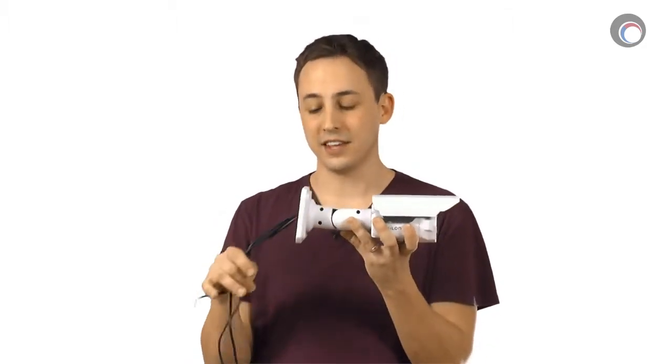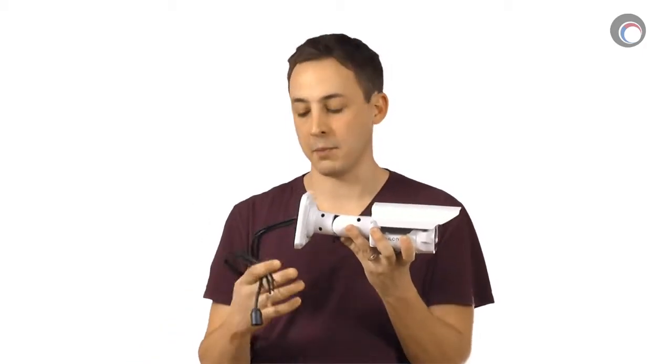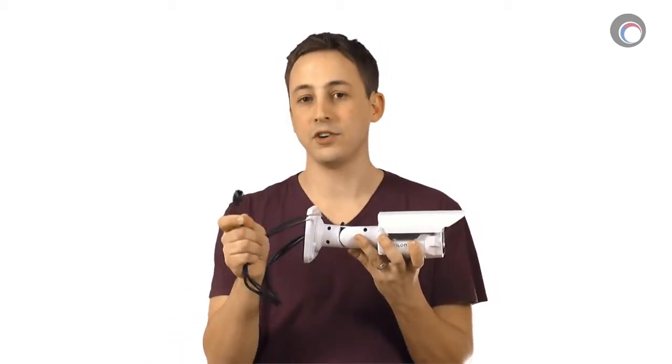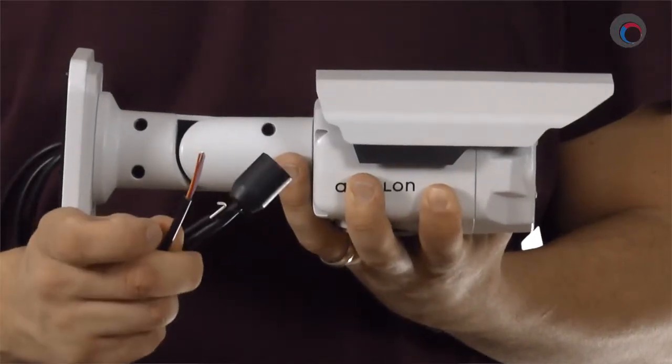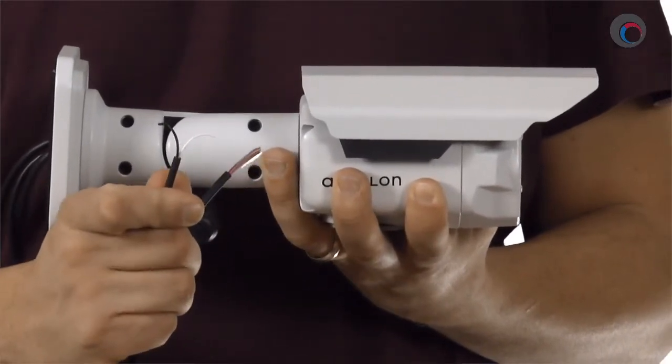As you can see, the camera itself is a little large for what you'd expect from a bullet camera. On the back here is your Ethernet cable, your auxiliary inputs and outputs cable, as well as an external power supply cable if you choose not to use power over Ethernet.